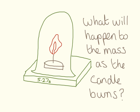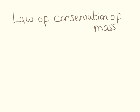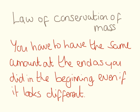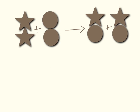Now some of you may have already seen this. The surprising thing that happens is that the mass stays exactly the same. A lot of students expect that after the candle has finished burning there will be a decrease in mass because the candle has burnt away, or an increase in mass because of any ash or soot collected. This is all because of the law of conservation of mass, which says you have to have the same amount at the end as you did in the beginning, even if it looks different. And this is what we need to use for balancing equations.